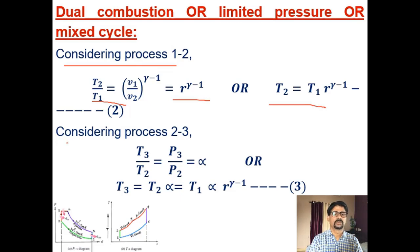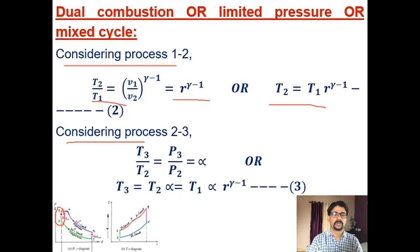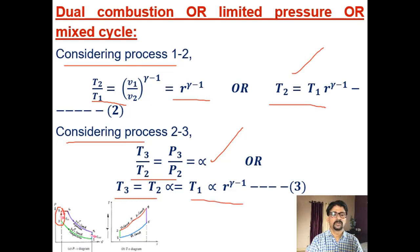For process 2 to 3 (constant volume): T3/T2 = P3/P2 = α, derived from the ideal gas equation with V2 = V3. Therefore T3 = T2 · α. Substituting T2 = T1 · r^(γ−1), we get T3 = T1 · α · r^(γ−1).